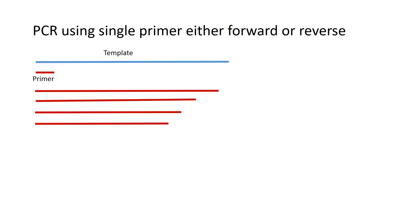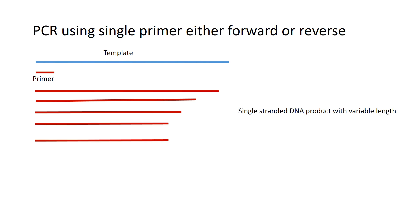When you perform PCR with a single primer you will get single-stranded DNA products of variable length. This is because if your template is very long, the primer will extend the strand to the maximum possible, and when the enzyme loses its processivity the extension stops. Each molecule of Taq polymerase will have different processivity, so the products formed will have variable length.